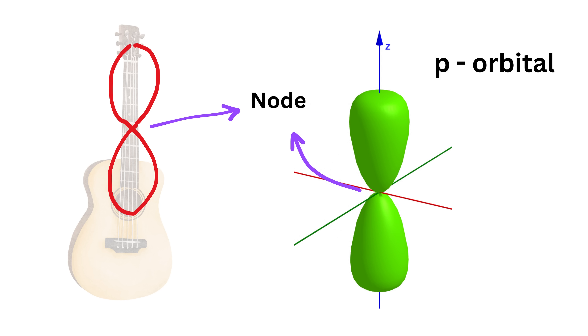The node is the point or plane where the wave amplitude is zero, meaning the electron wave never exists there. The more complex the orbital shape, the more nodes it contains.